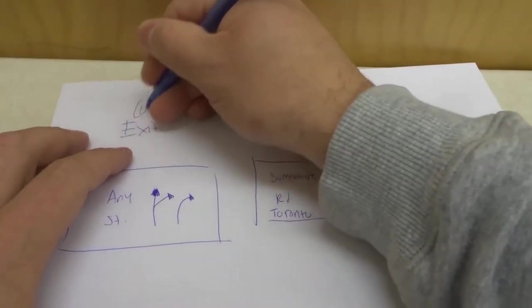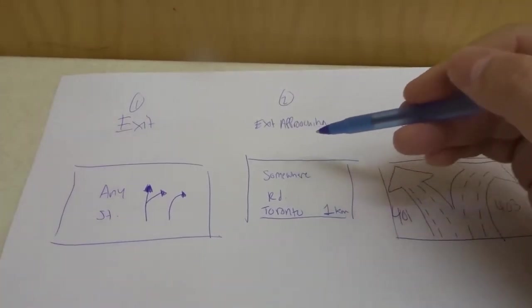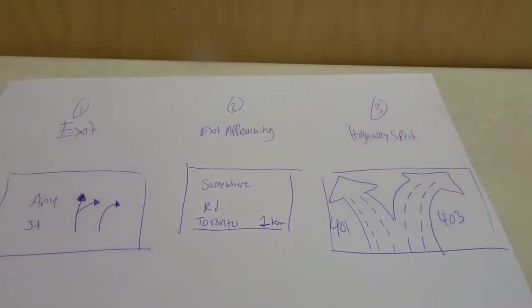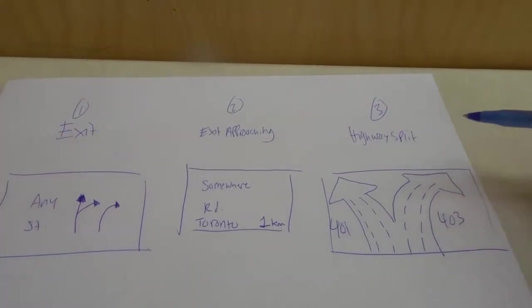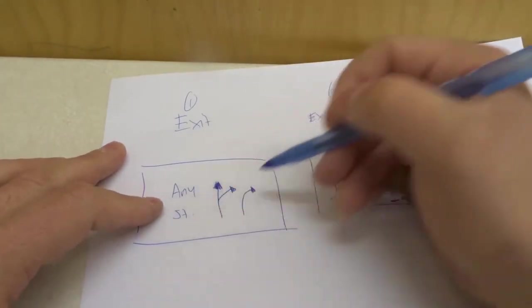The first one is the exit sign, the second one is the exit approaching sign so you're approaching an exit, and the third one is a highway split sign. So for the first one, the exit sign, you can see that it says any street.